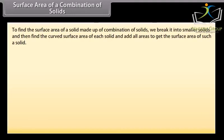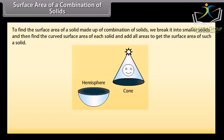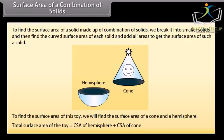Surface area of a combination of solids: To find the surface area of a solid made up of a combination of solids, we break it into smaller solids and then find the curved surface area of each solid and add all areas to get the total surface area. For example, this toy is a combination of a cone and a hemisphere. The total surface area of the toy equals the curved surface area of the hemisphere plus the curved surface area of the cone. Let's solve some examples.